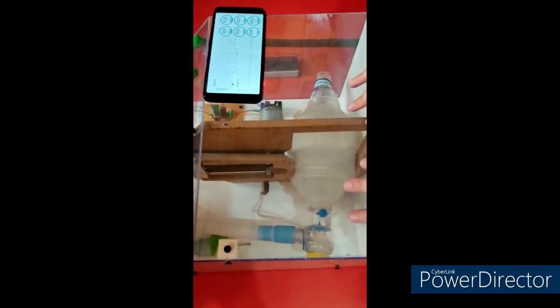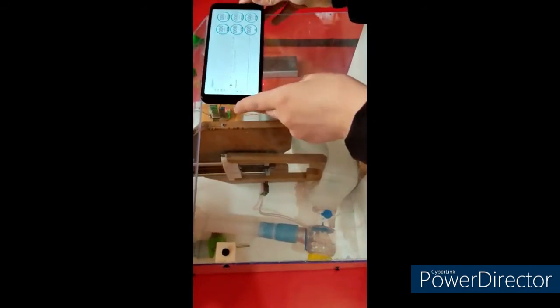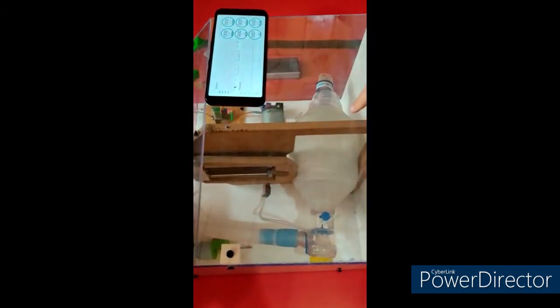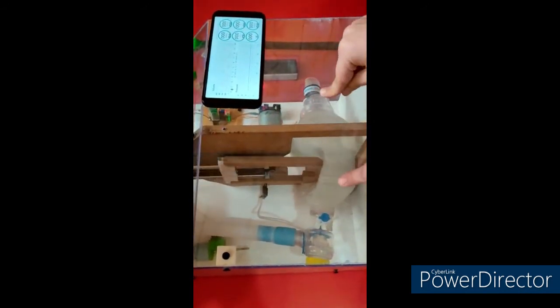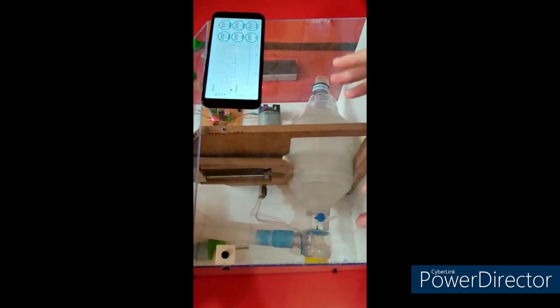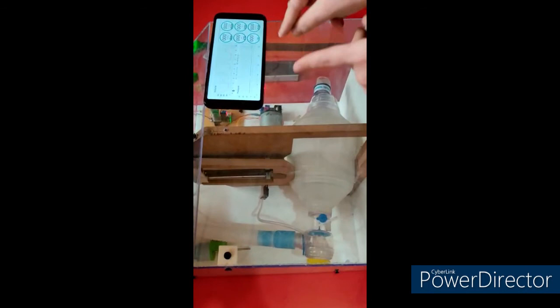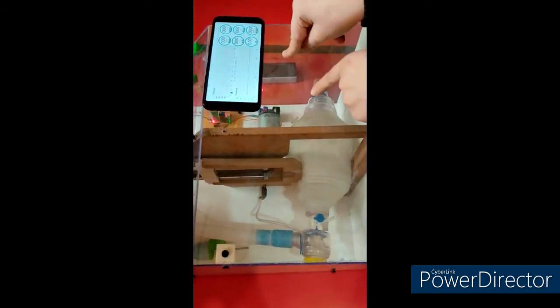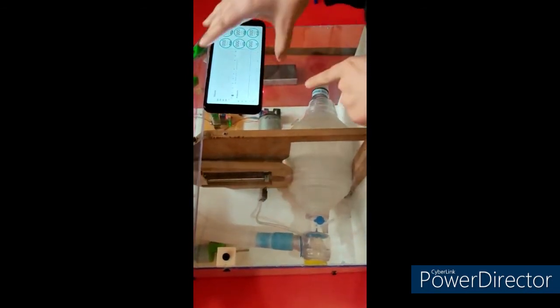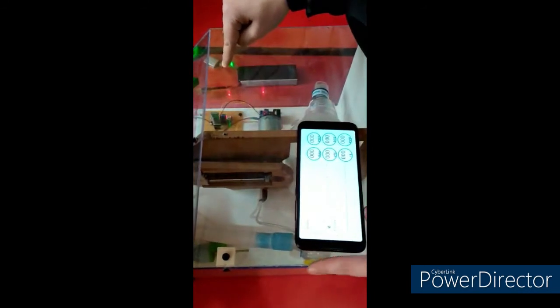Also, in this project, we are using an Android app. You can see here is the Android app which we are using in this project. This Android app sets each and every setting of ventilator using Bluetooth module. We give the input in this Android app to the microcontroller using Bluetooth module. Here, in this circuitry, we also use Bluetooth module.